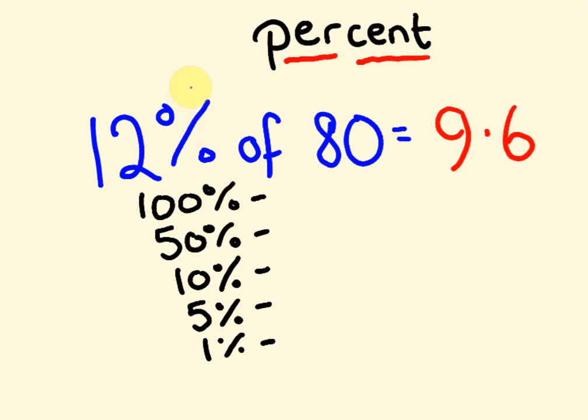100% of a number, 100 parts out of 100, is the number itself. So 100% of 80 is 80. 100% of 64 is 64. 50%, 50 parts out of 100, is a half of the number. So half of 80 is 40. 50% of 70 would be half of 70, 35.